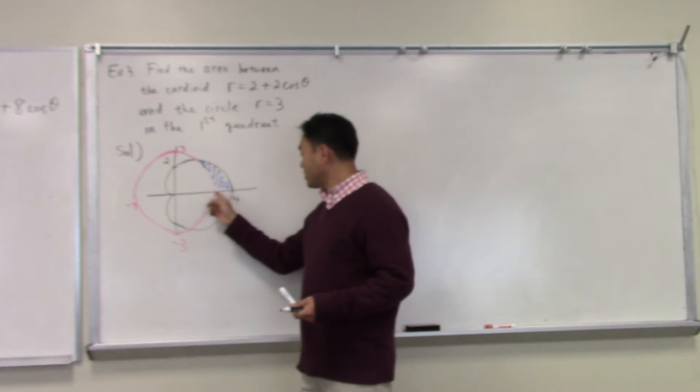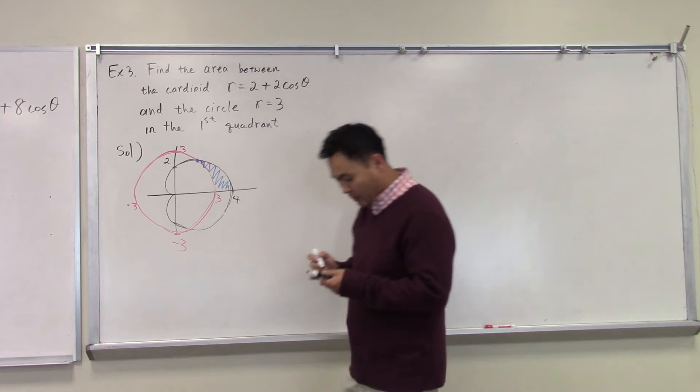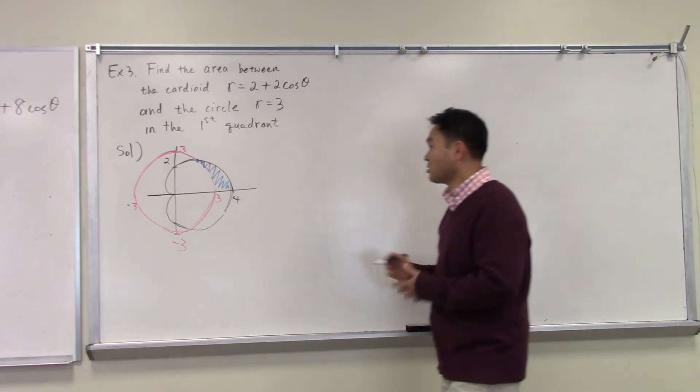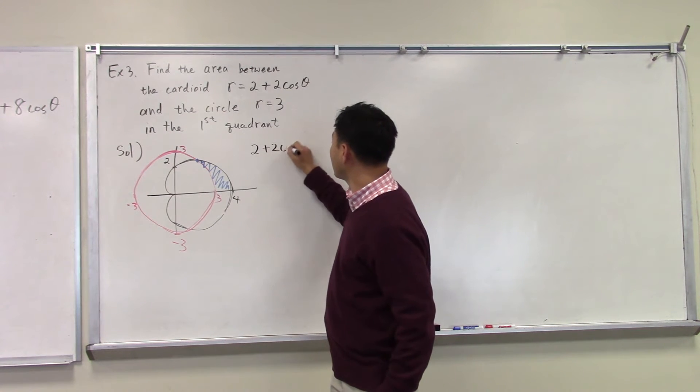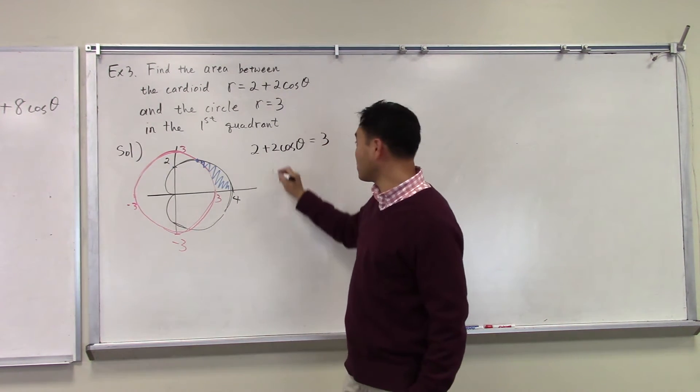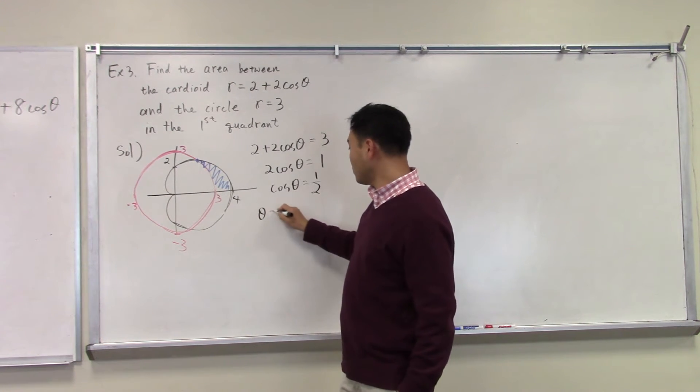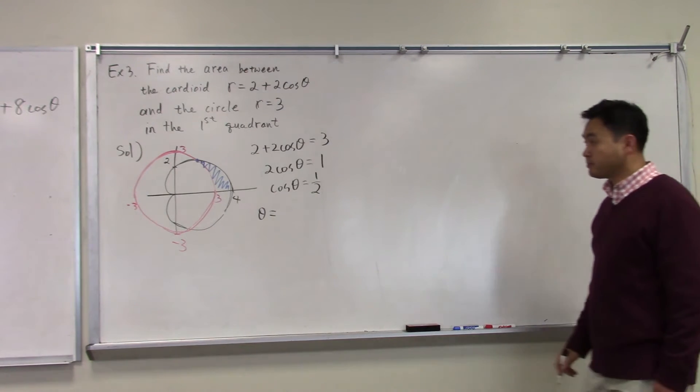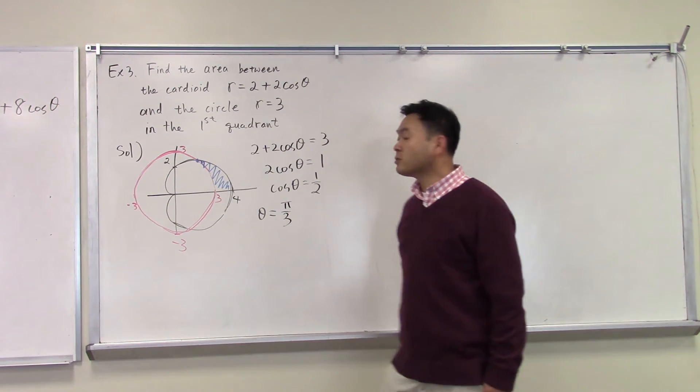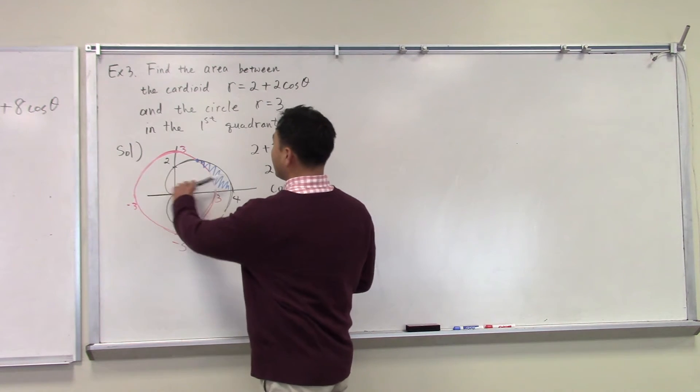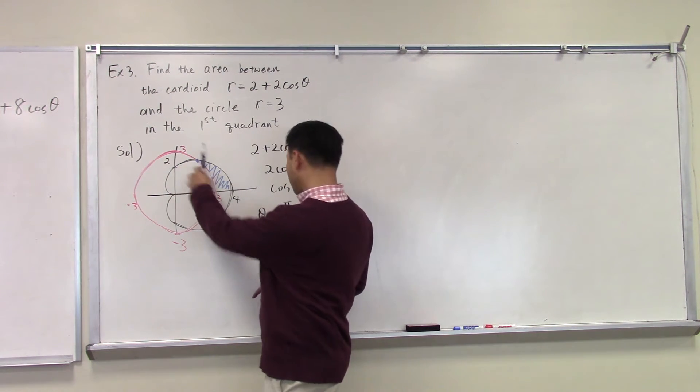We know where this domain begins. It starts here, which is theta equal to zero, but what we are not so sure of is where do they meet here? To find the intersection, you just set them equal to each other. r is two plus two cosine theta, r is equal to three, set them equal. Two cosine theta is equal to one. Cosine theta is equal to one-half. At what angle does cosine become one-half? Sixty degrees. And in terms of radians, this is pi over three. So the rays that hit this region start from theta equal to zero until pi over three.